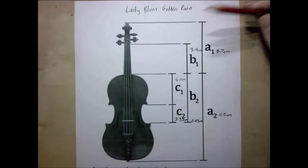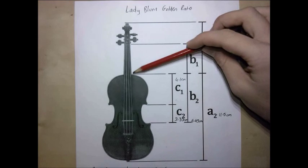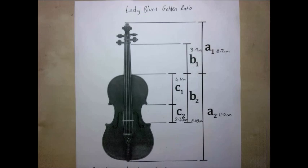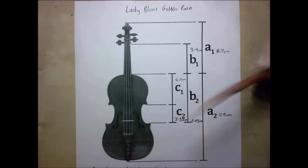It was also found that from the start of the neck to the end of the middle bout was 4.1cm, while the middle bout itself was 2.35cm.